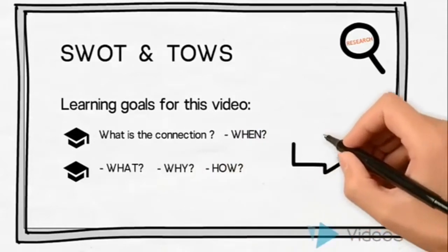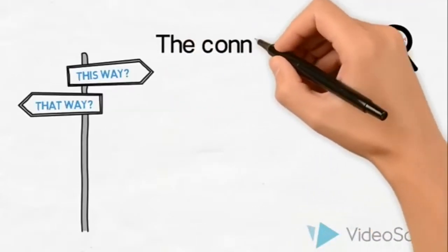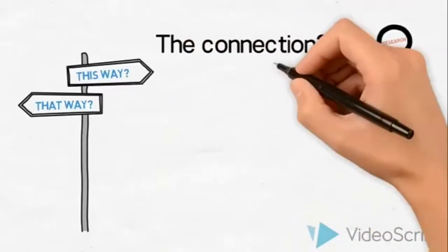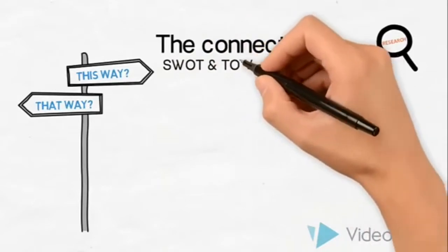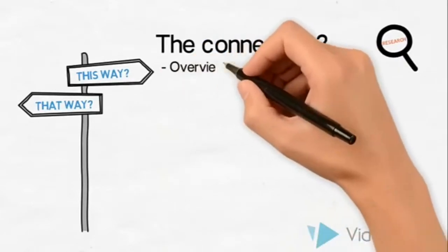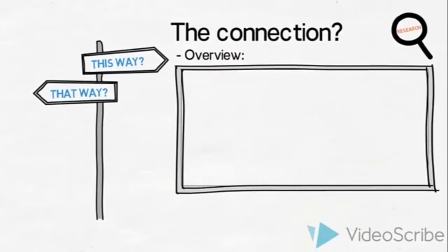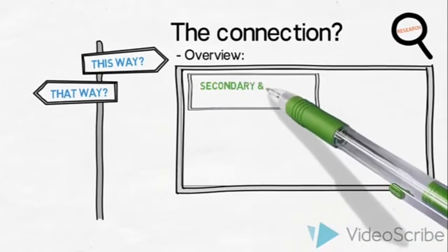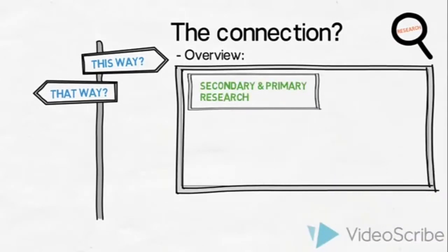So let us begin. What is the connection? When in the process would the SWOT and the TAOS be conducted? Once having established a problem or an opportunity that we wish to explore, we would do some research. We might wish to conduct both secondary and primary research.